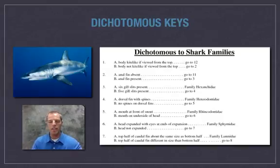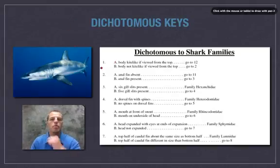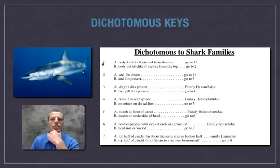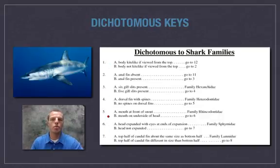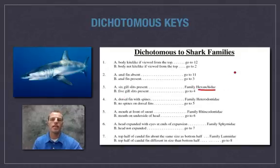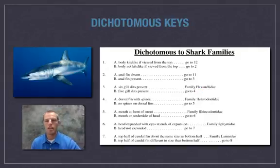Anytime we use a dichotomous key, we always start with number one. We work down through the questions until we can narrow it down to specifically what family the organism is in. Let's practice that here.